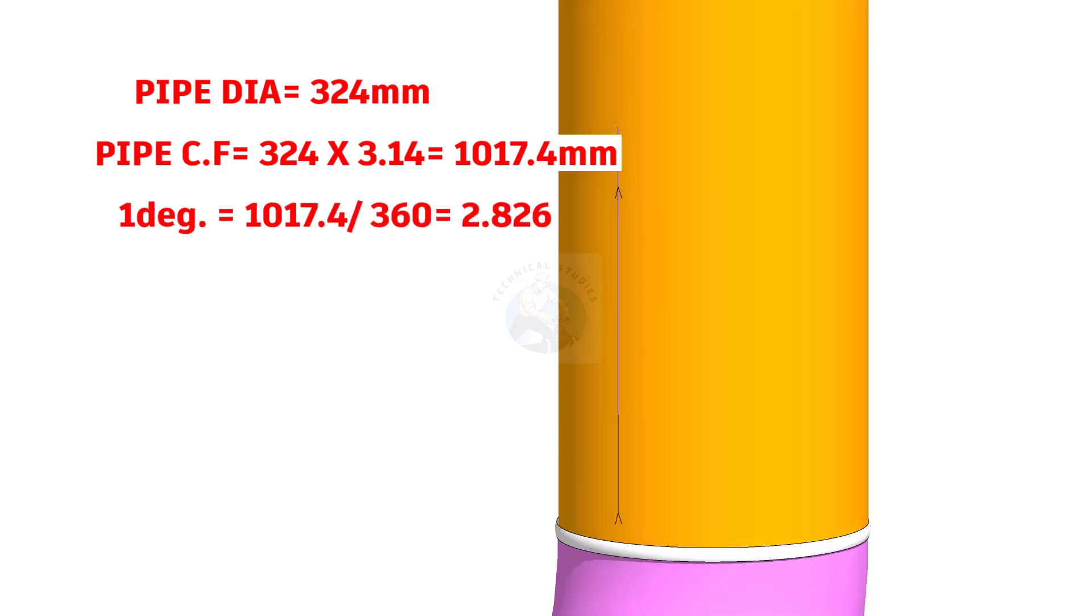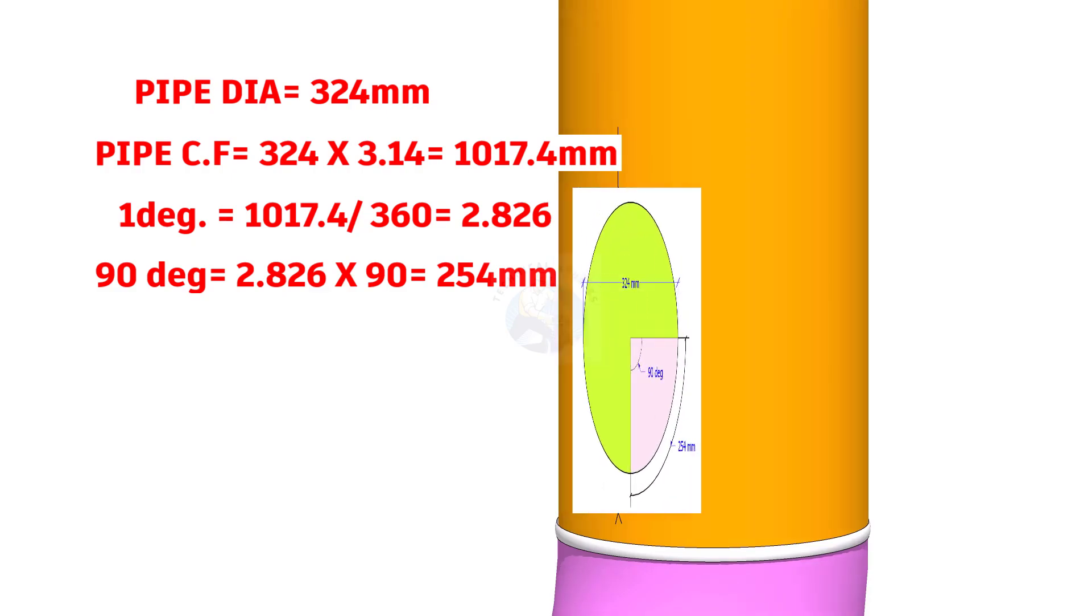1 degree equals 1017.4 divided by 360, equals 2.826. 90 degree equals 2.826 multiplied by 90 equals 254 mm.